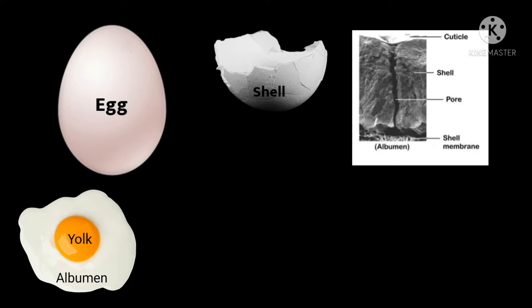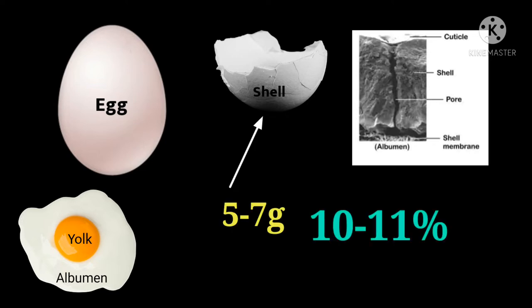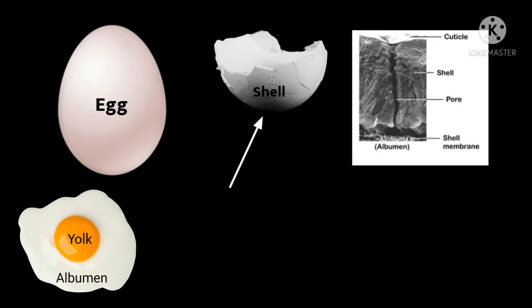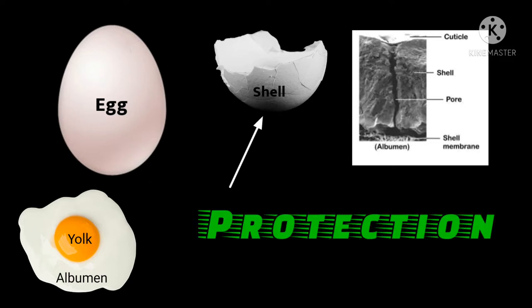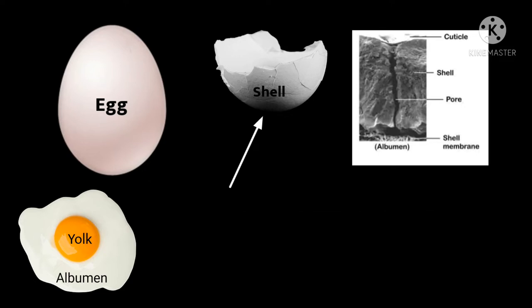Before going in detail about eggshell defects, we will see the structure of eggshell. Usually shell weighs between 5 to 7 grams, which is 10 to 11 percent of total egg weight. Its main function is to protect the content of the egg from the microbial and physical environment. It controls the exchange of water and gases. Eggshell is composed of mainly 94 to 97 percent of calcium carbonate. The calcium content of eggshell is approximately 1.7 to 2.5 grams.